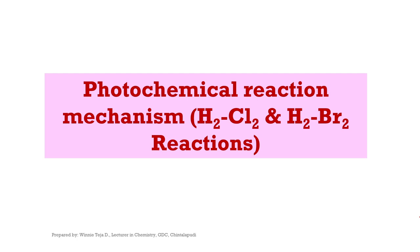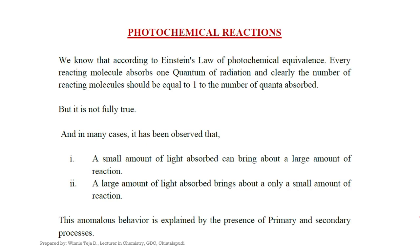Dear students, let us learn about photochemical reaction mechanisms. According to Einstein's law of photochemical equivalence, every reacting molecule absorbs one quantum of light radiation, and the number of reacting molecules should equal the number of quanta absorbed. But this is not fully true. In many cases, a small amount of light absorbed can bring about a large amount of chemical reaction, and a large amount of light absorbed can bring about only a small amount of chemical reaction. This anomalous behavior is explained by the presence of primary and secondary processes.